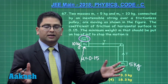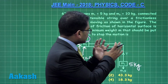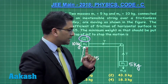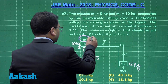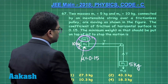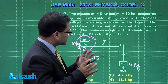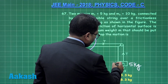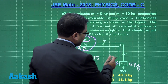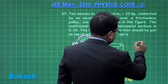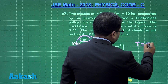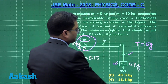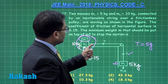The overall state of motion is that the system is at rest. In this situation we can take m and m2 as one system, which simplifies the solution greatly. For the system at rest, from the free body diagram, tension T equals 5g.